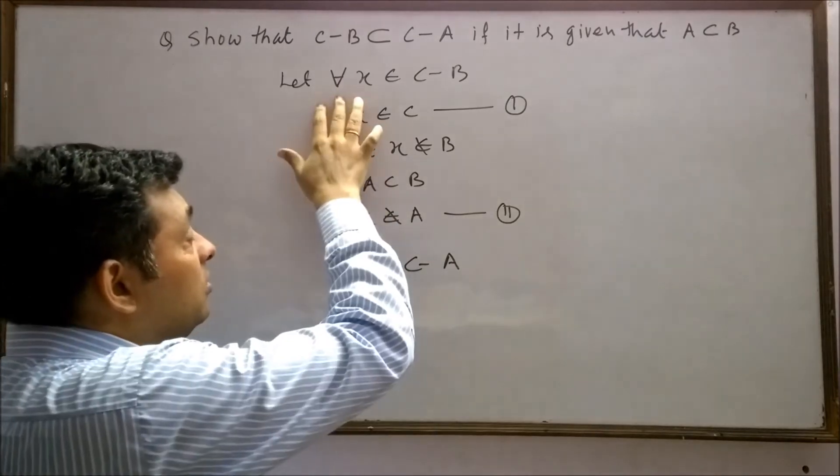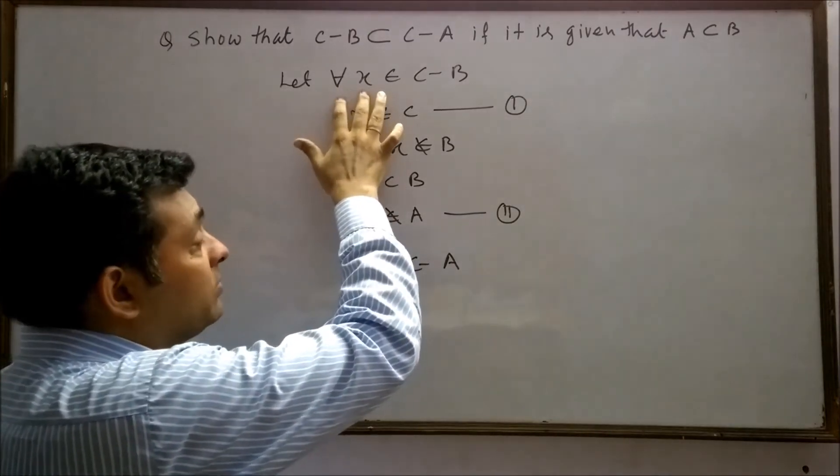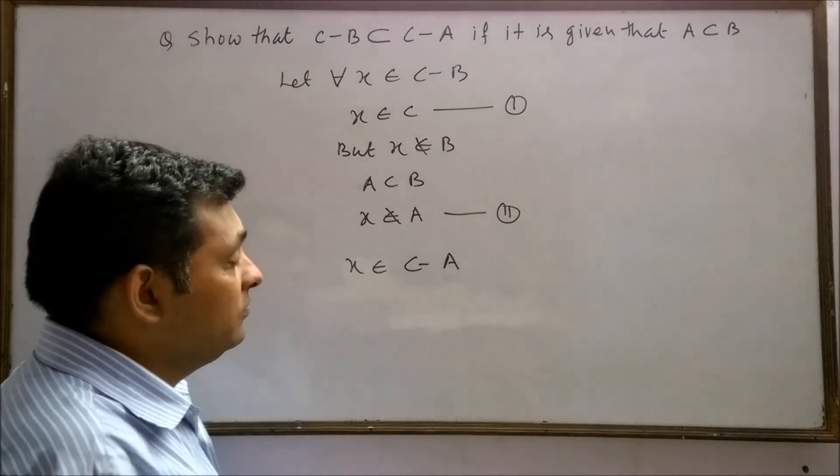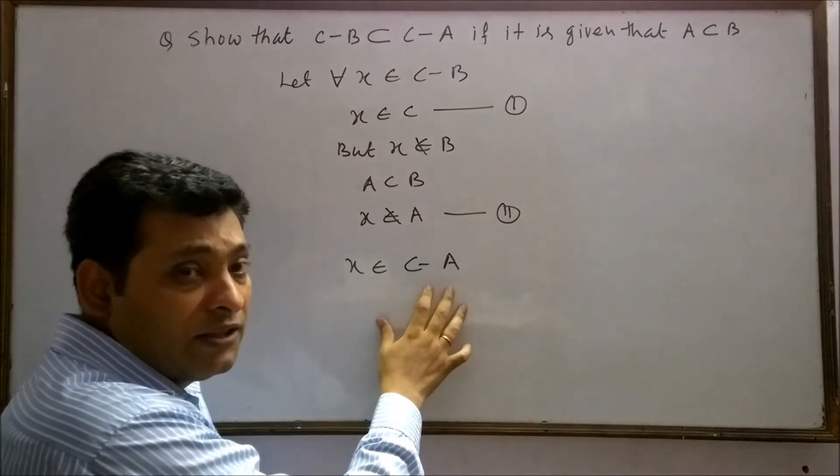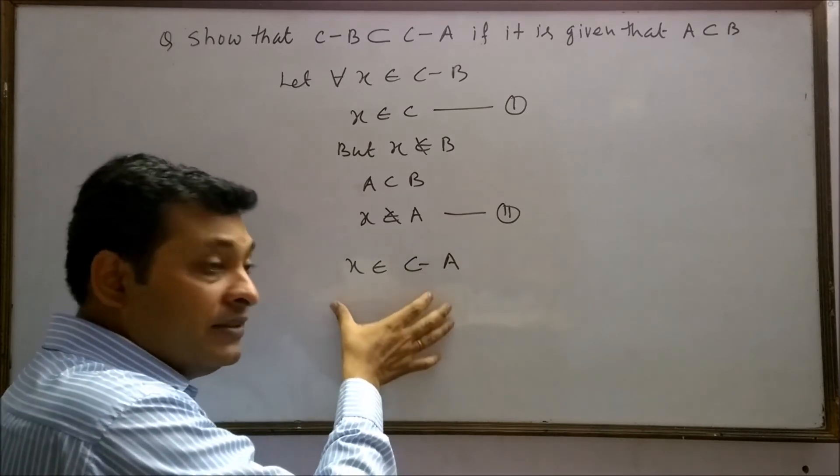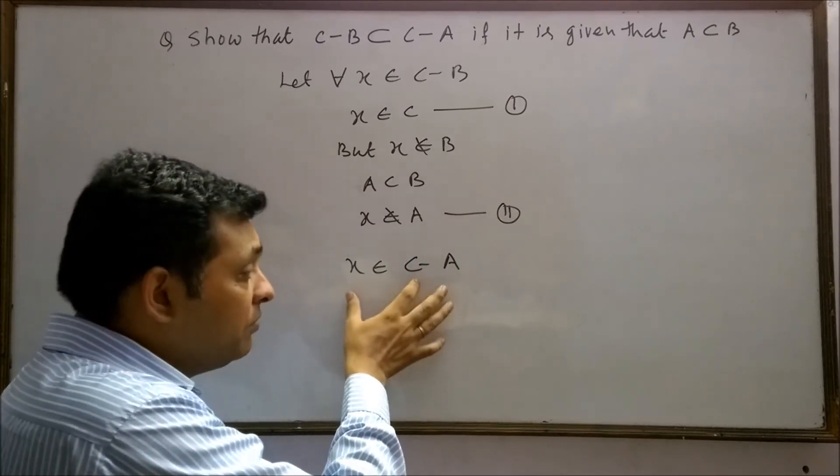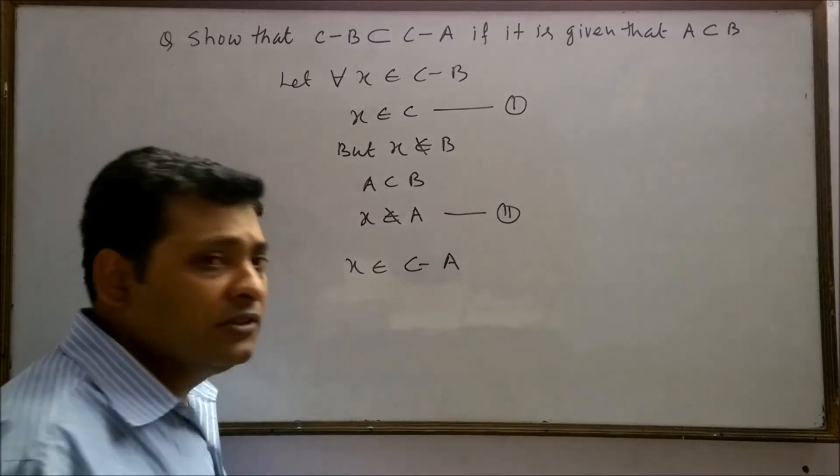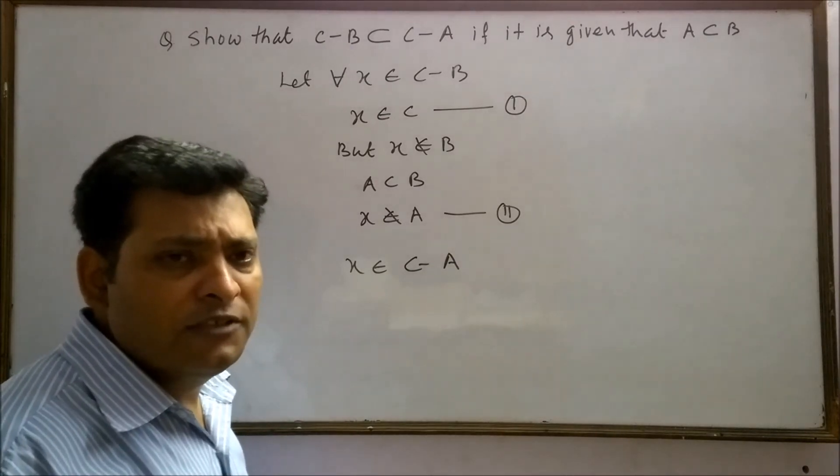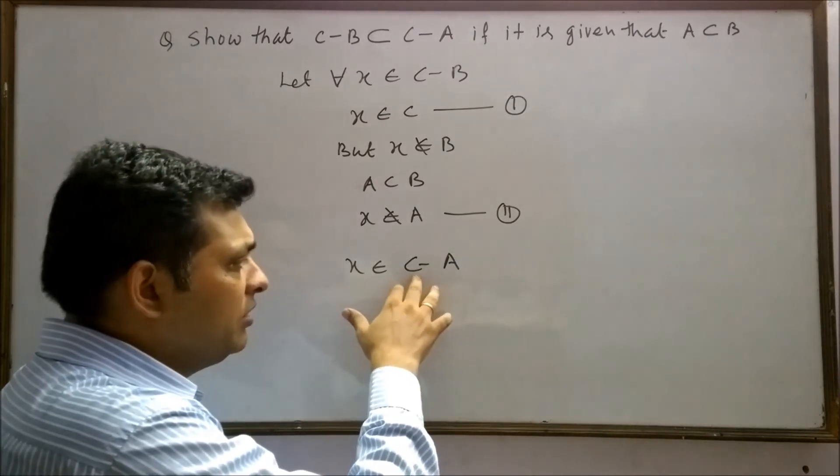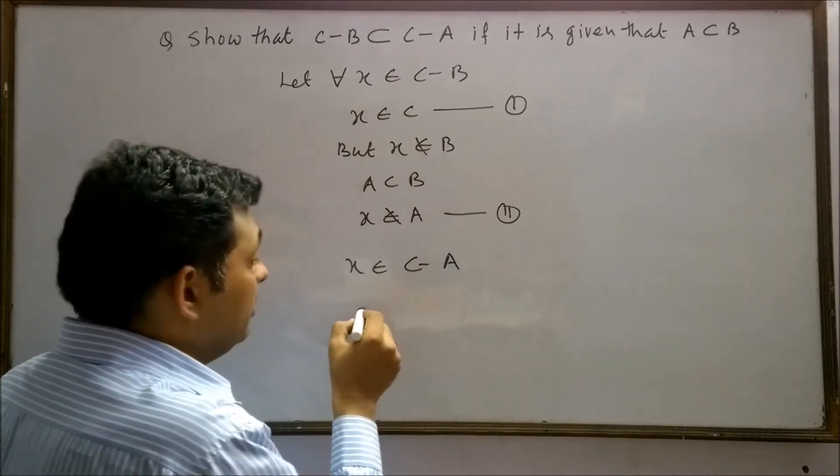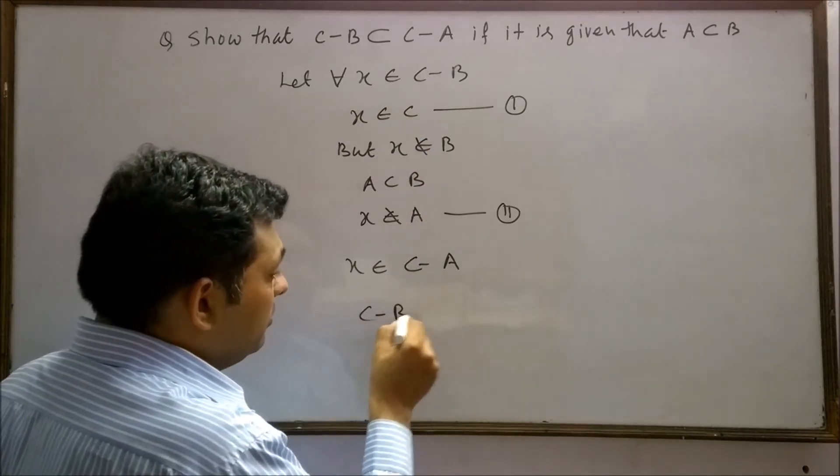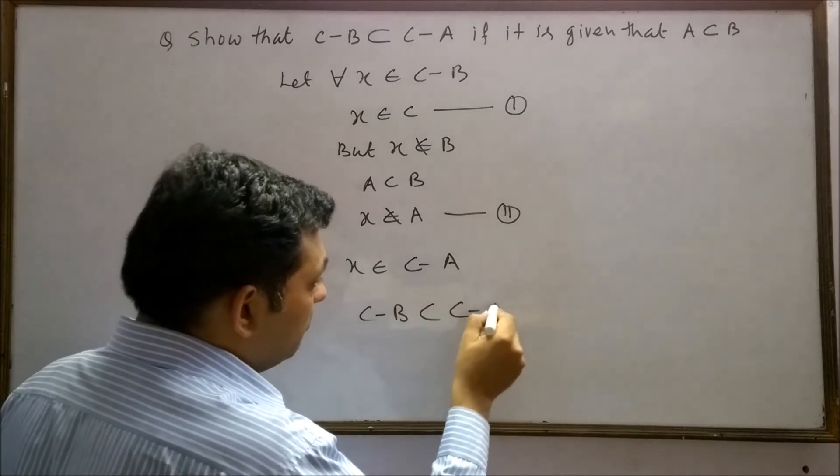Here, we have taken all x belonging to c-b. The result is that x belongs to c-a. This means at least x belongs to c-a, which means some other elements may be possible which are contained in c-a. So, we can conclude that c-b is a subset of c-a.